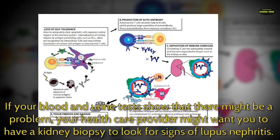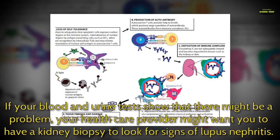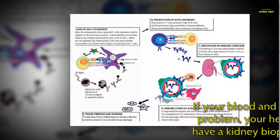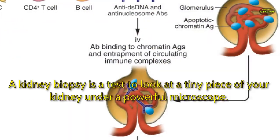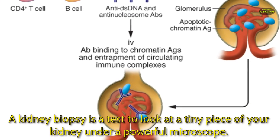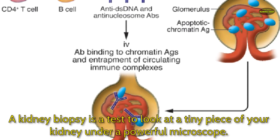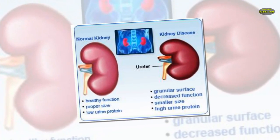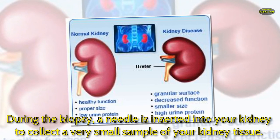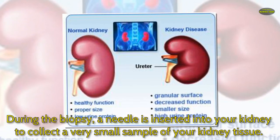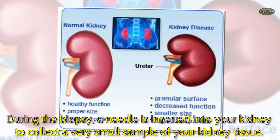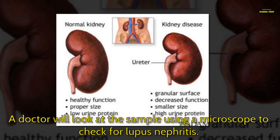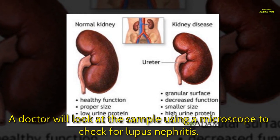If your blood and urine tests show that there might be a problem, your health care provider might want you to have a kidney biopsy to look for signs of lupus nephritis. A kidney biopsy is a test to look at a tiny piece of your kidney under a powerful microscope. During the biopsy, a needle is inserted into your kidney to collect a very small sample of your kidney tissue, which a doctor will examine under a microscope.